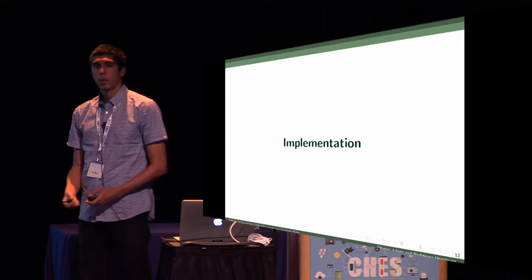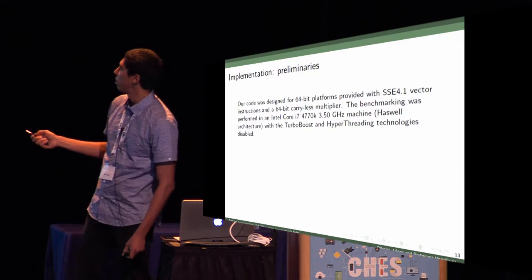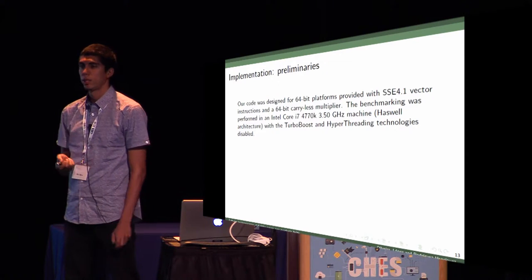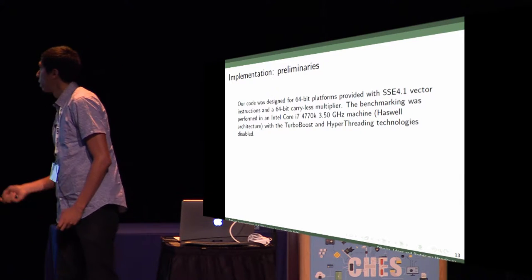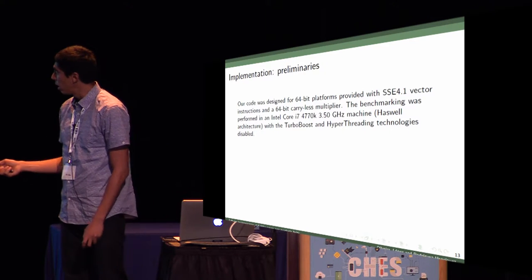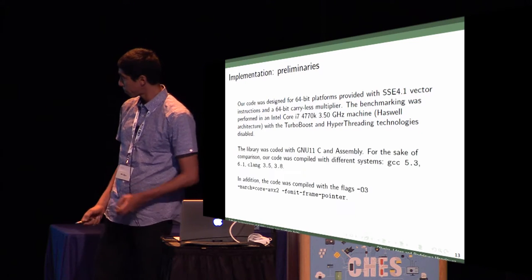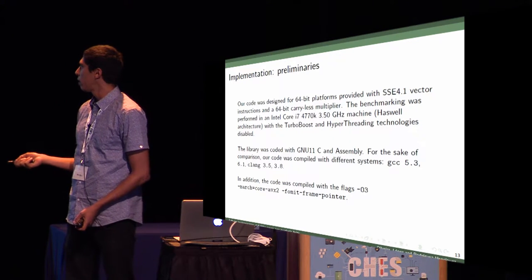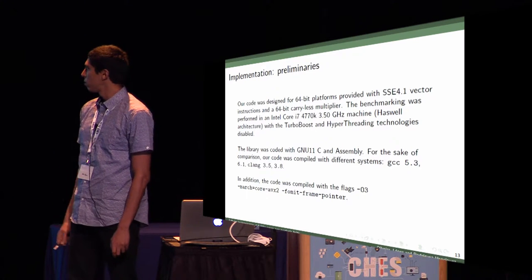Let's see our implementation. Our code was designed for 64-bit platforms embedded with vector instructions, 128-bit vector instructions, and a 64-bit carryless multiplier. Benchmarking was performed in Haswell architecture, a 2.4 GHz machine, with turbo boost and hyper-threading technology disabled. We coded our library in C and assembly, and compiled our code in different systems for the sake of comparison with these optimization flags.